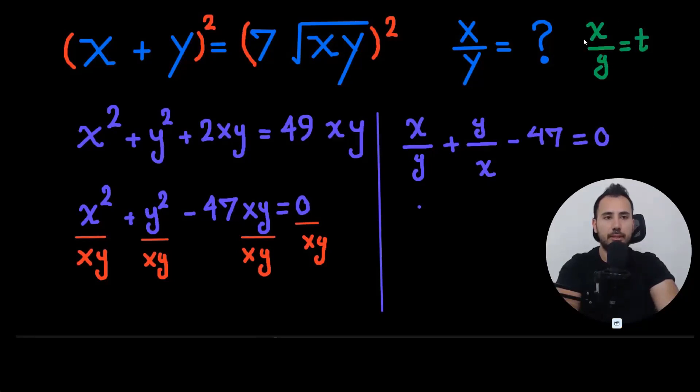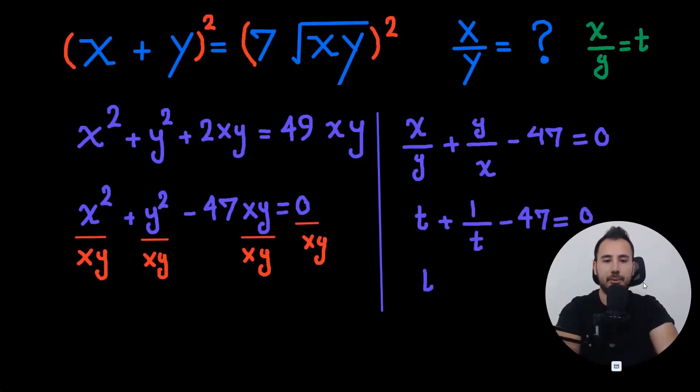Now let's just call x over y, t. So this will turn into an equation that we're more comfortable with, t plus 1 over t minus 47 is equal to 0. Let me go down a little.